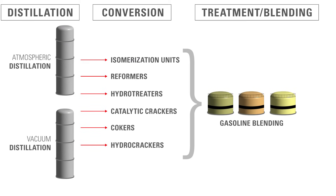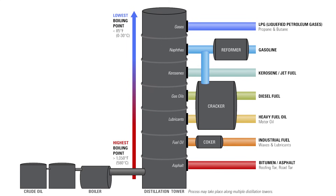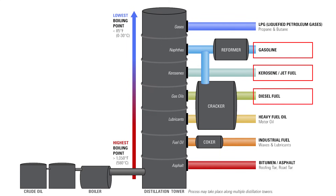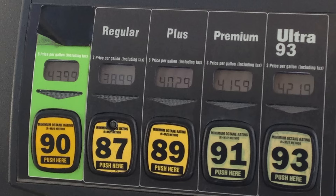During treatment, or blending, the elements are blended together to make various types of products that are usable as engine fuel. The final products are then distributed by retailers as something you may recognize: high or low-octane gasoline, diesel, biodiesel, or gasoline with ethanol.